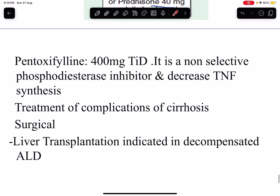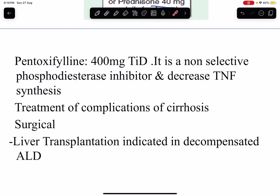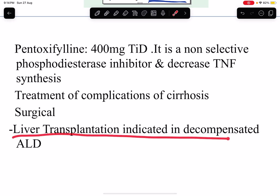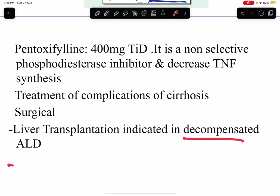In the stage of cirrhosis, the important management is the management of complications. We need to identify and manage those complications, which will be discussed in upcoming classes. Lastly, liver transplantation is indicated in decompensated alcoholic liver disease. Not everyone fulfills the criteria for liver transplantation, but it is an important modality in decompensated cases.